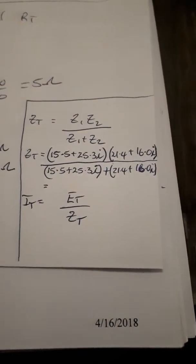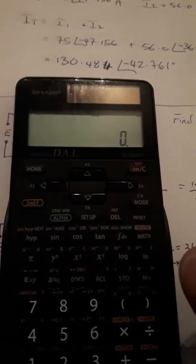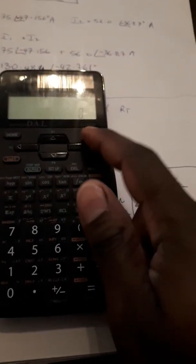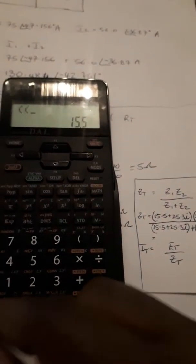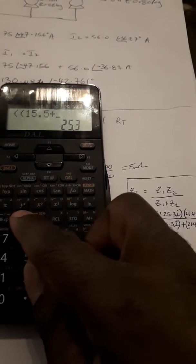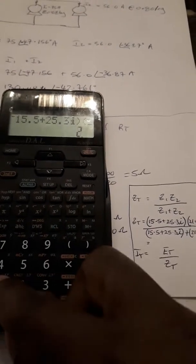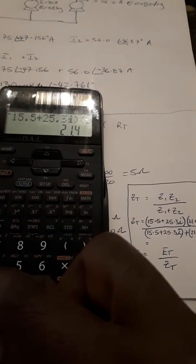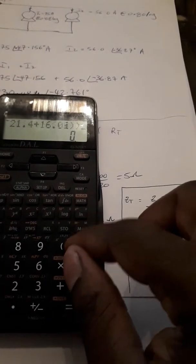So we're looking at 15.5 plus 25.3i, close bracket. That's doing the product there: 21.4 plus 16.0i, close bracket, close bracket.